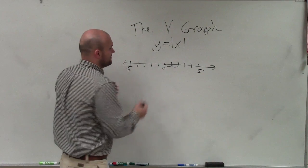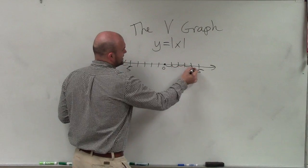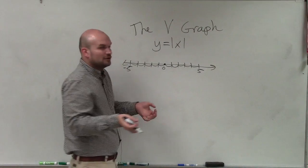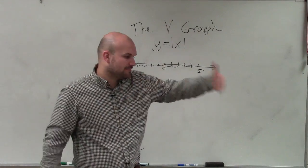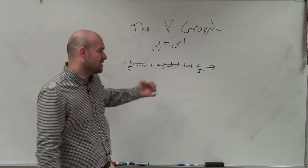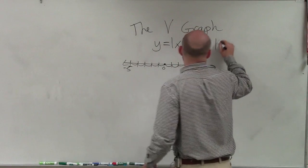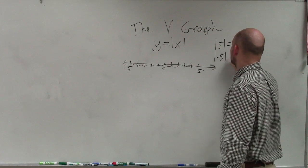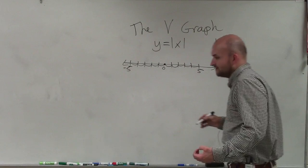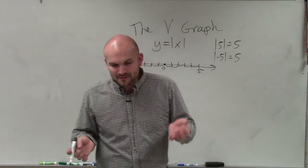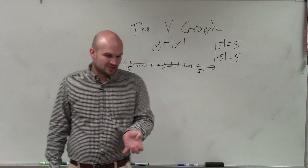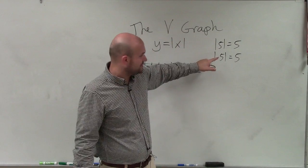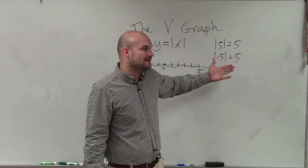So what that means is it doesn't matter if I travel to the right to positive 5 or travel to the left to negative 5, I still traveled 5 units. It doesn't matter if it's in the positive or negative direction, I still traveled 5 units. So therefore, the absolute value of 5 is equal to 5, and the absolute value of negative 5 is also equal to 5. Think of it as distance, not direction. The absolute value, it doesn't matter if you travel in the positive or negative direction, you've still traveled 5 units.